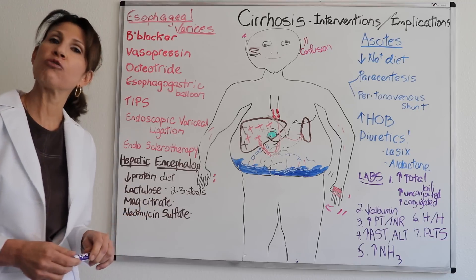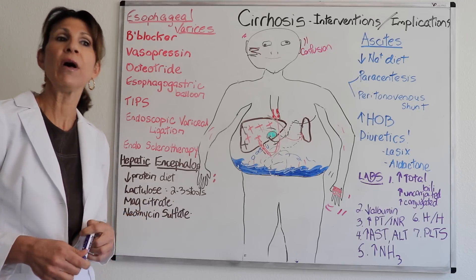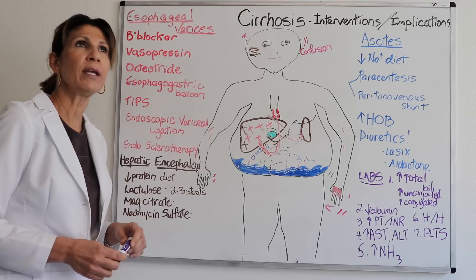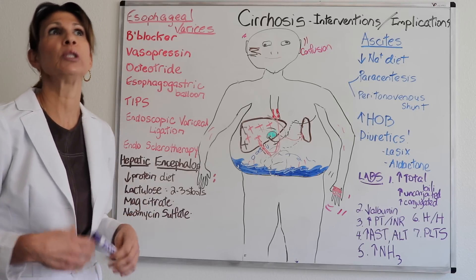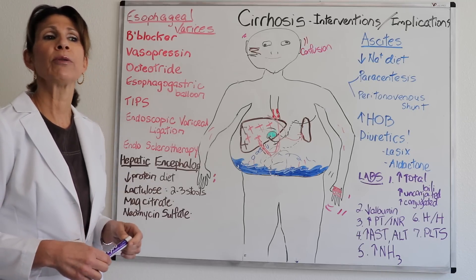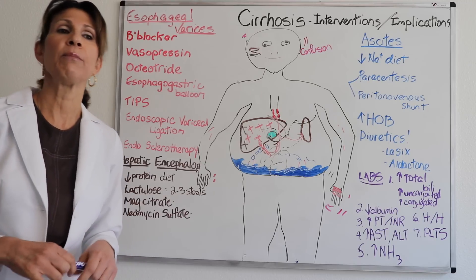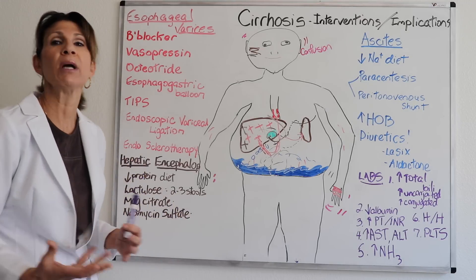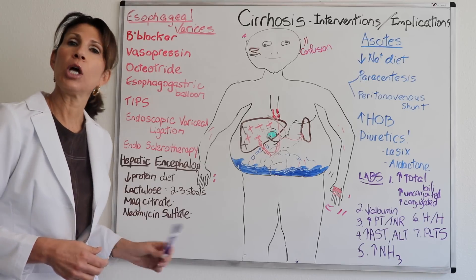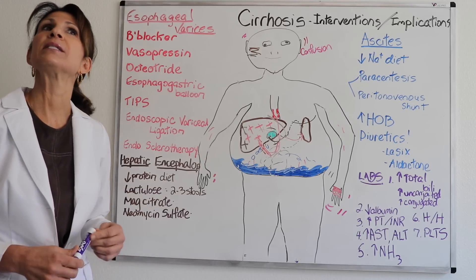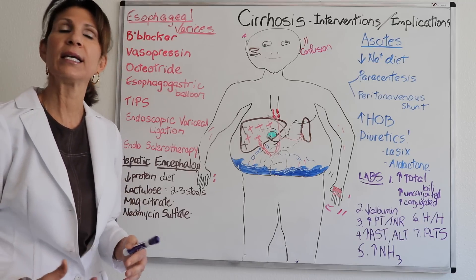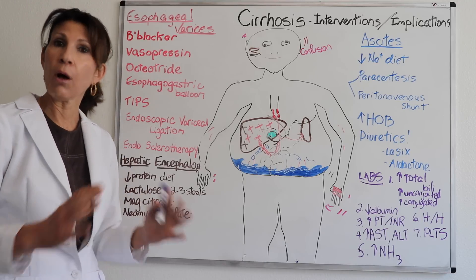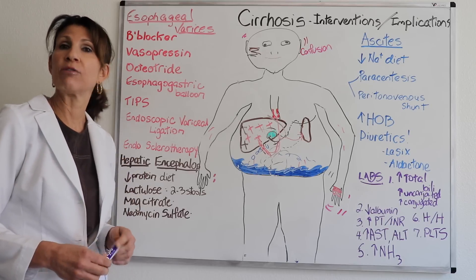Mag citrate also serves the same purpose as lactulose but is a different type of cathartic — both will purge the bowel. You want to target two to three soft stools per day; otherwise you risk inducing diarrhea and fluid and electrolyte imbalances. Neomycin sulfate is an antibiotic that stays in the gut and sterilizes it, killing off the normal flora bacteria so protein degradation can't take place.